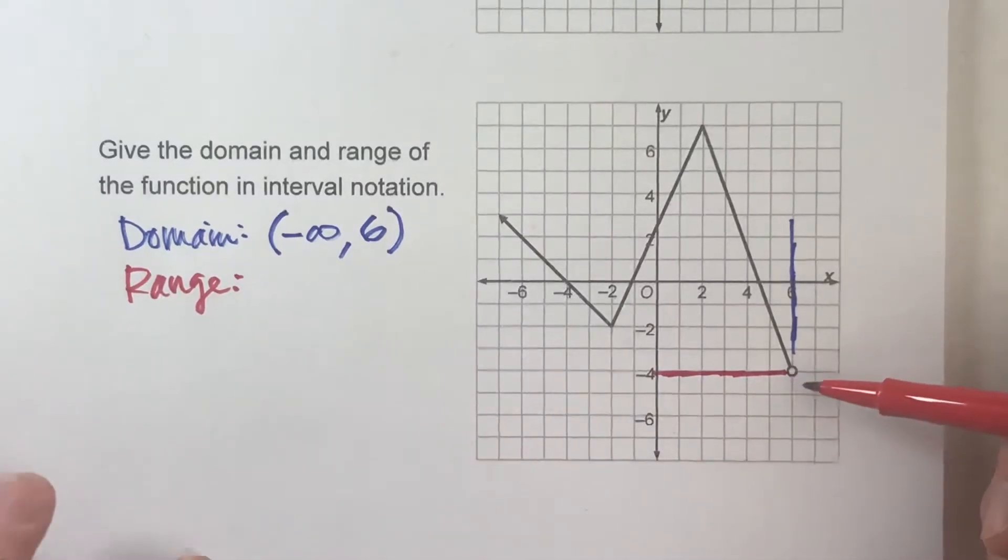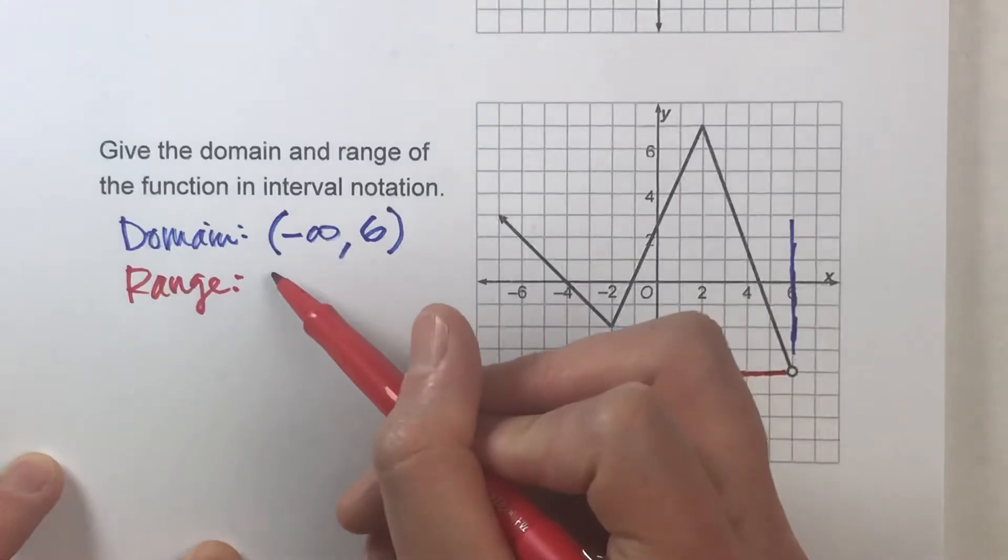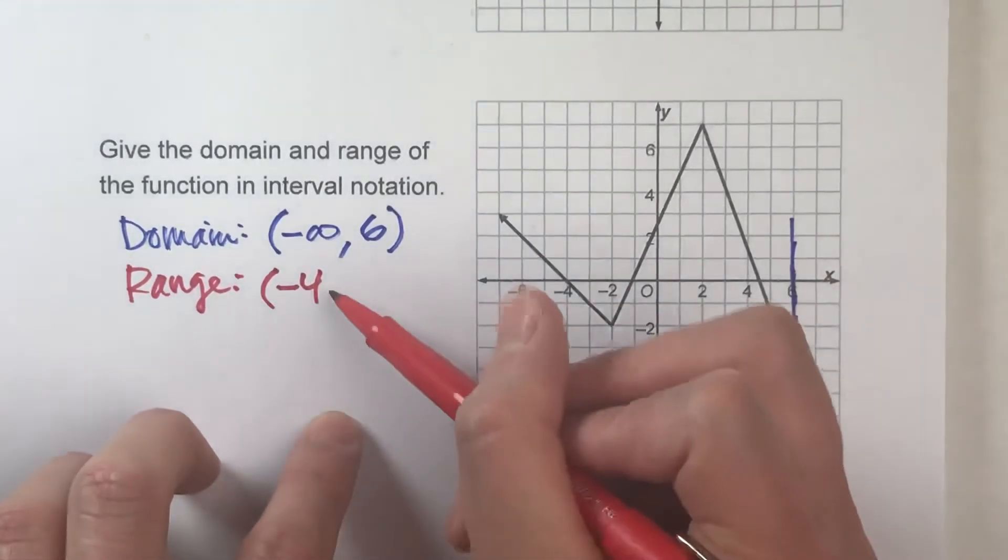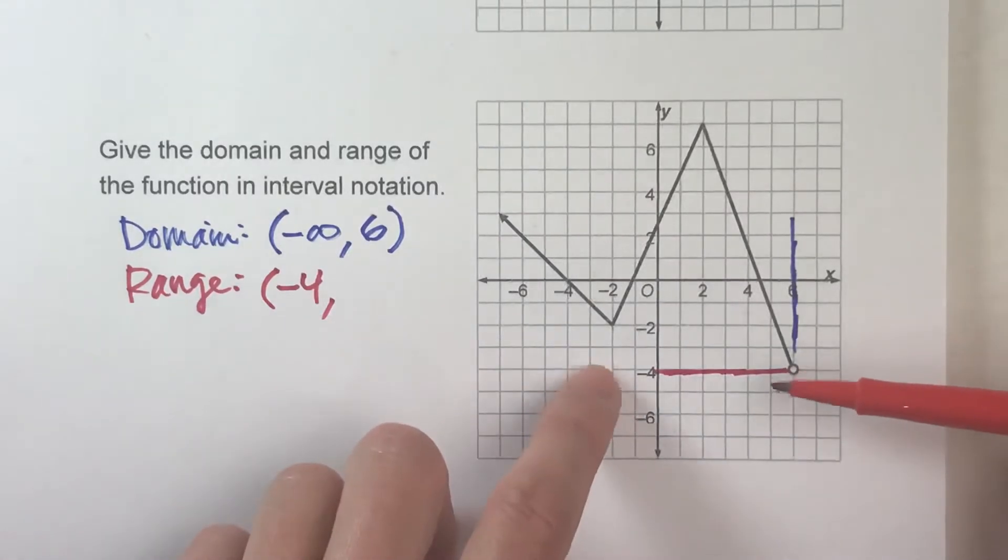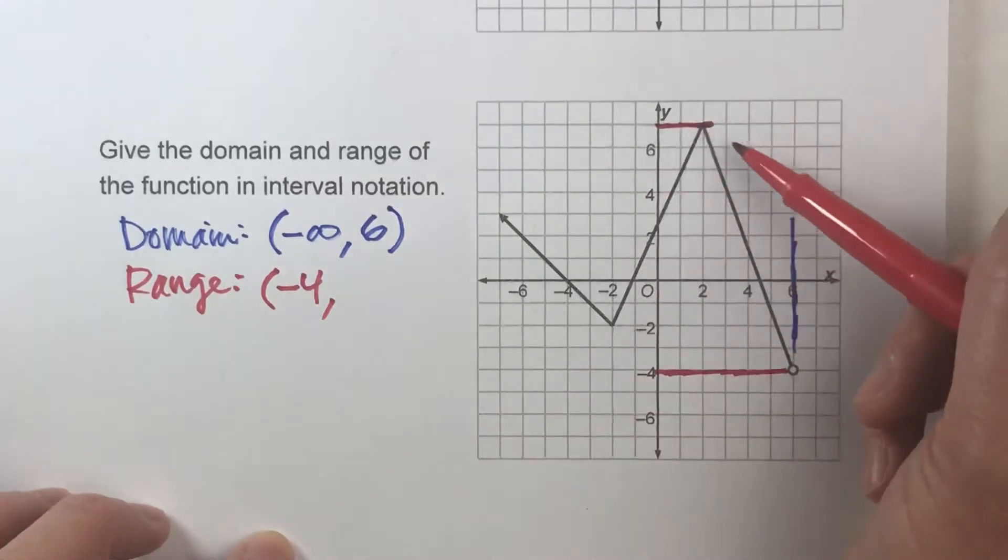So yeah, it gets really close to negative 4, but it never gets to negative 4. So we are going to use the parentheses and the negative 4. Now, what's the biggest y value? Let's see. You might be tempted to say, oh, it's right here because there's the peak of our graph at 7. But don't forget about this arrow.